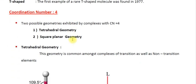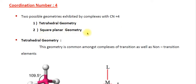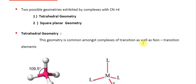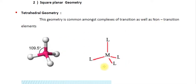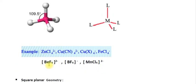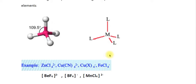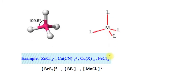Coordination number 4 is a common coordination number. The two possible geometries exhibited by complexes with coordination number 4 are tetrahedral geometry and square planar geometry. Tetrahedral geometry is common among complexes of both transition and non-transition elements. The metal is arranged with 4 ligands at a bond angle of 109.5 degrees. Examples include [BeF₄]²⁻, [MnCl₄]²⁻, [ZnCl₄]²⁻, [Cu(CN)₄]²⁻, [CuX₄]⁻, and [FeCl₄]⁻.